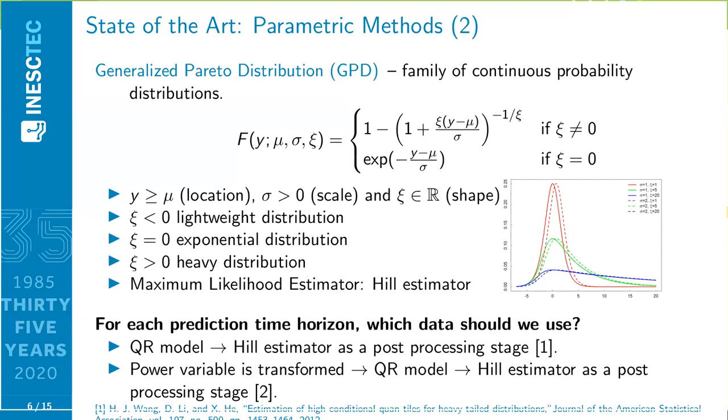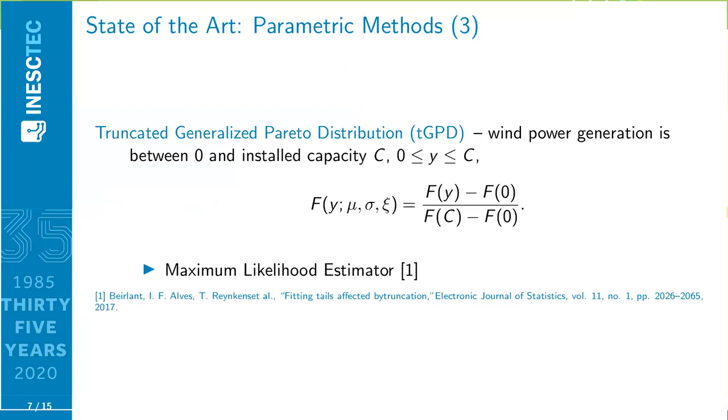Given that, the same authors propose to transform the wind variable first through power transformation, and then apply the same framework. Here we have two limitations. First, extreme quantiles are originally estimated through a non-parametric model. And secondly, the GPD assumes power values between zero and plus infinity, which is not realistic. Since wind power generation is limited between zero and installed capacity, we should consider the truncated GPD distribution. In this case, Verlain et al. provide an estimator for this truncated GPD, but do not consider that the variable to be predicted is conditioned by covariates. Then, for each prediction horizon, our challenge is to construct a sample that captures the wind power uncertainty, given a set of covariates, and then apply the truncated GPD to estimate the extreme quantiles.